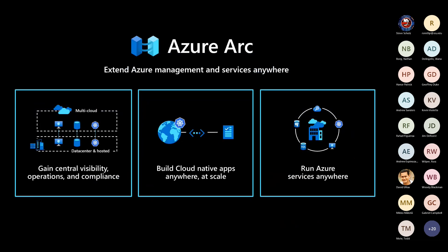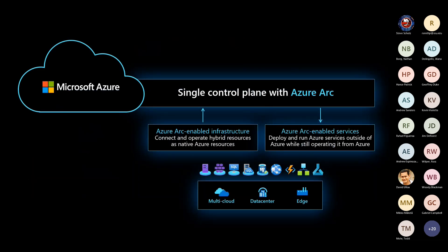To recap, Arc brings three main capabilities: first, that control plane view — a central portal for managing your entire fleet. Second, applying security tools, business rules, and compliance policies. Third, the ability to bring PaaS services on-prem, enabling cloud-native apps to run on your bare metal. Essentially, you can start running those Azure services everywhere.